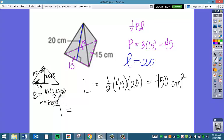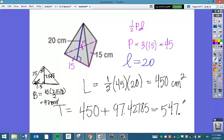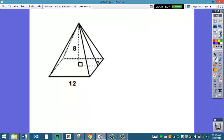So my total surface area is going to be my lateral surface area, 450, plus that area of the base, 97.4278. I'm going to add those together to get my total surface area, which will be 547, let's round to the nearest tenth.